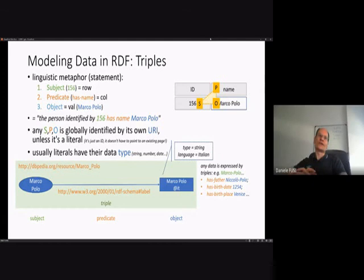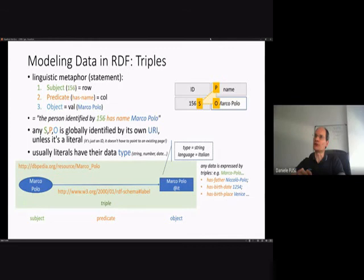Any data is expressed by triples. For instance: Marco Polo has father Nicola Polo — subject, predicate, object. Or: has birth date 1254 — here the object is a literal, just a year. Or: has birthplace Venice — another subject-predicate-object triple. Whatever we want to say about something is expressed in this form of a simple statement triple.